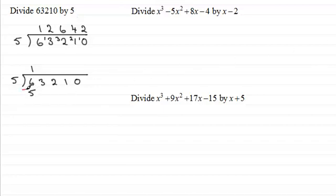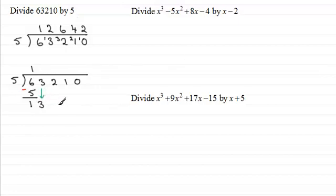We take away the 5 from the 6 to give us the remainder. I know up here we could see instantly that it was 1, but the key point is the layout. So 6 take away 5 gives us 1. That 1 was what we carried across to the 3 to make 13. But with this style, what we do is we bring down the 3 and write it against the 1 to give us 13. We start again — what do we need to multiply 5 by to get as close as we can to 13? It's 2. So put the 2 there and do 5 times 2 giving us 10. Put that underneath there.